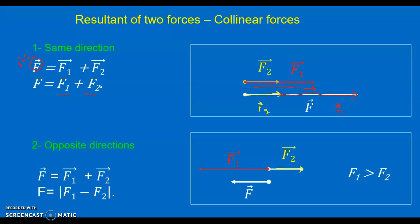When we express the resultant as a vector we use a minus sign, but as a magnitude it should always be positive. In this case F1 is greater than F2 because the length of F1's vector is greater — when represented on the same scale this confirms F1 > F2, so F1 minus F2 is positive, but we apply the absolute value as a general rule regardless.